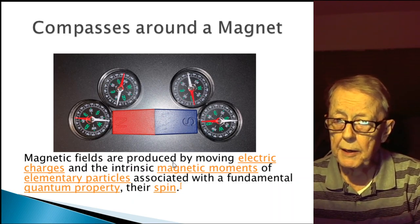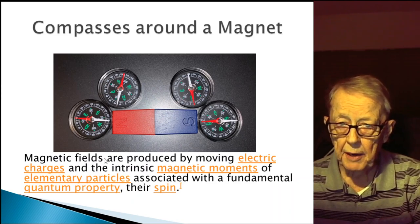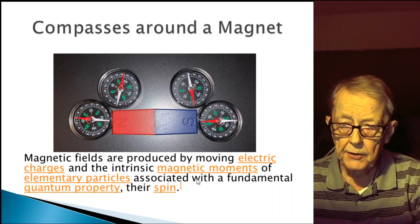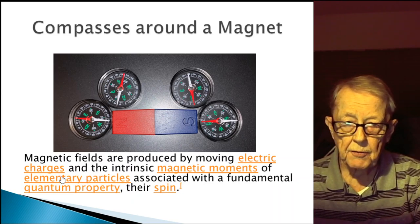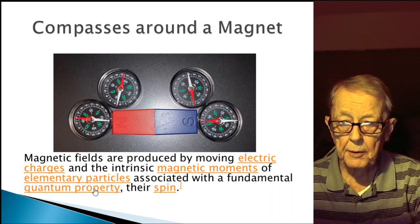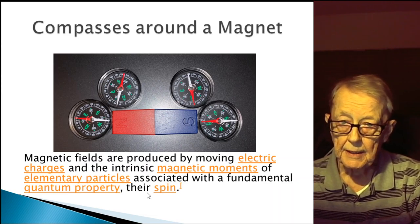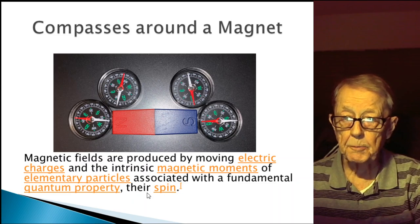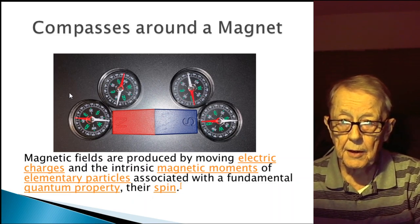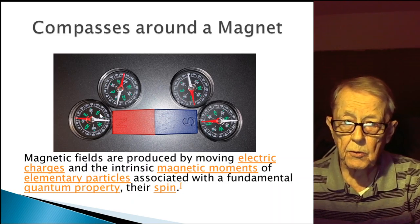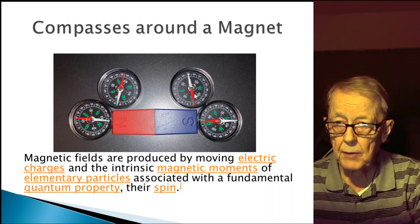Wikipedia claims that magnetic fields are produced by moving electric charges and the intrinsic magnetic moments of elementary particles associated with a fundamental quantum property — their spin. Somehow magnetic fields are generated by spin. Nonetheless, you can move the compass around the magnet and watch the needle change position as it goes around; when placed at the top it'll be horizontal.